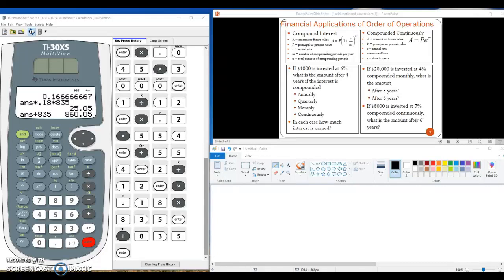Our second application of order of operations is compound interest, and this is a little bit more complicated formula. Again, you will not be memorizing the formula. You will be provided with the formula and all the information in the little box on the quiz. So as long as you can make sense of it, you can use that information rather than memorize.